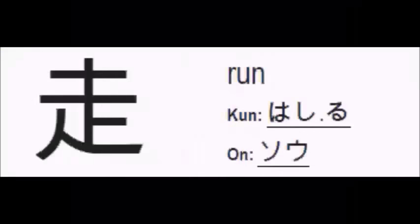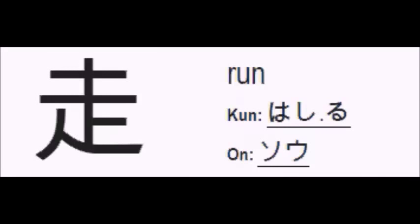The next kanji is Hashiru — Hashi of Hashiru, which means to run. This kanji has 7 strokes: 1, 2, 3, 4, 5, 6 and 7. The Kunyomi reading is Hashi of Hashiru and the Onyomi reading is So. The only meaning associated with this kanji is run.